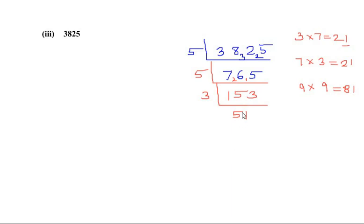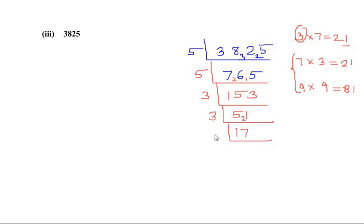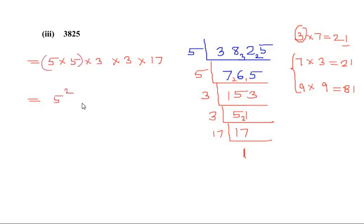Now checking 51: 3 times 17 gives us 51, so 51 is also divisible by 3. The last number we have is 17, which is itself a prime number — 17 times 1 gives us 17. So we can express 3825 as 5 times 5 times 3 times 3 times 17, or using laws of indices: 5 to the power of 2 times 3 to the power of 2 times 17.